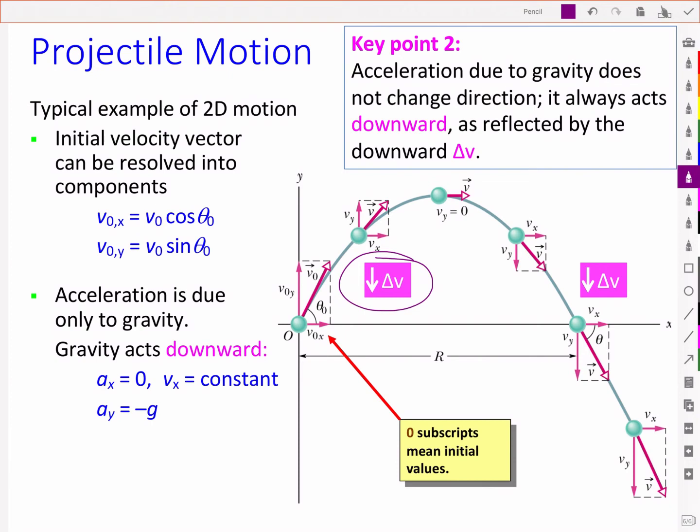This is the opposite direction to the upward velocity, so the negative delta V decreases the positive velocity, and it is in the same direction as the downward velocity later, so the negative delta V increases the negative velocity. Keeping track of these signs or directions is extremely important.